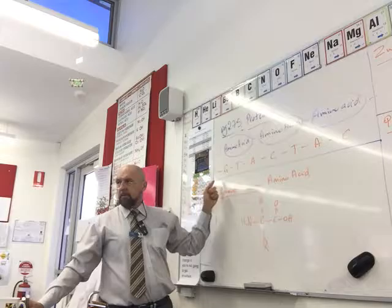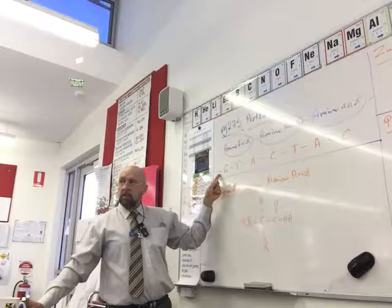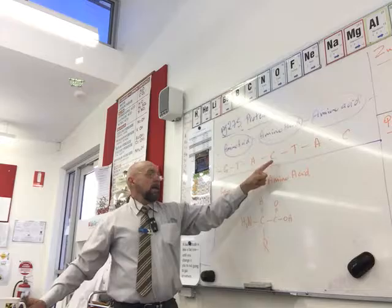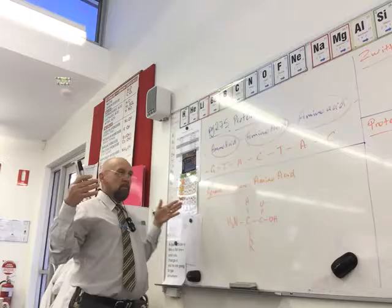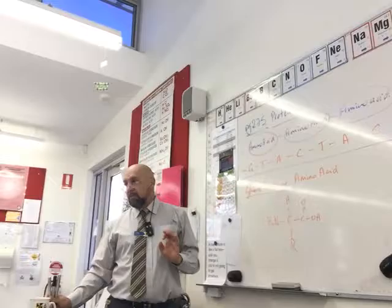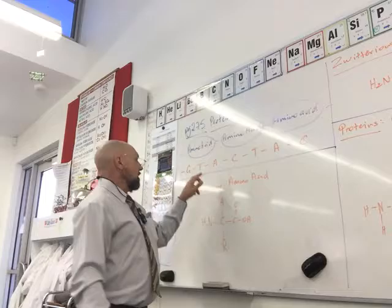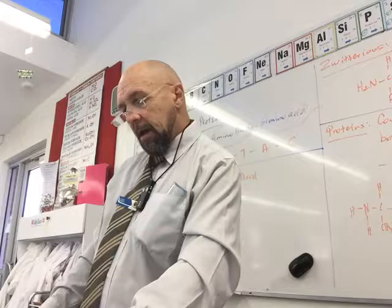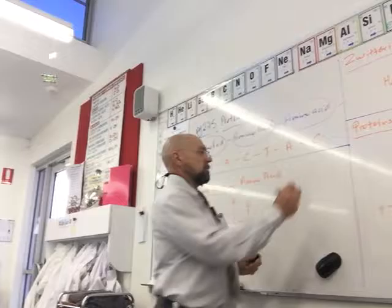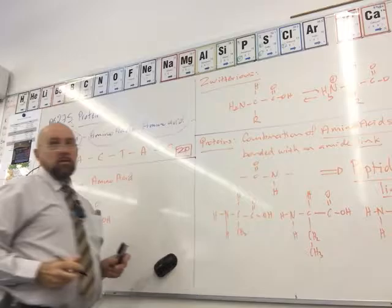This is called the primary structure of the protein molecule. The primary structure is simply looking at a huge molecule and identifying each amino acid that makes up the chain. For example, G corresponds to glutamine and T corresponds to tyrosine. You don't have to know the names of the amino acids — just the general structure and where they come from.